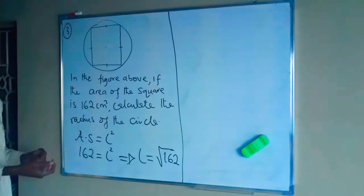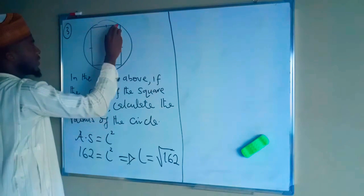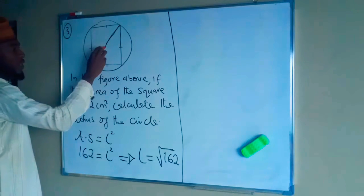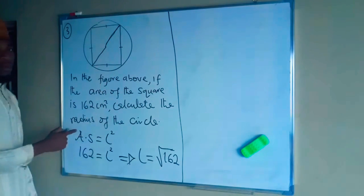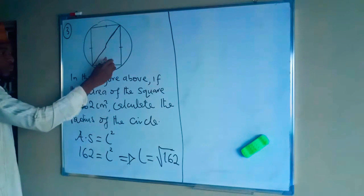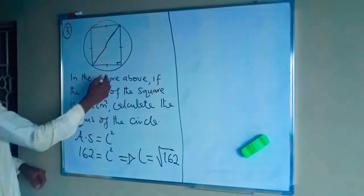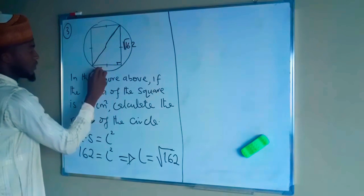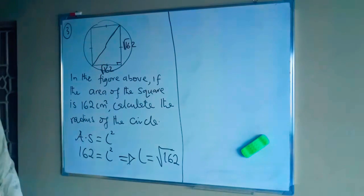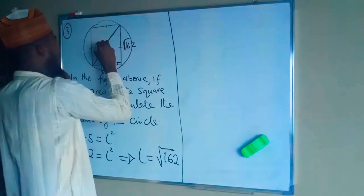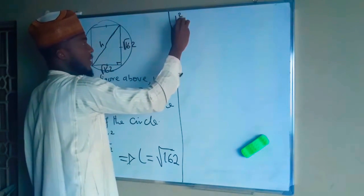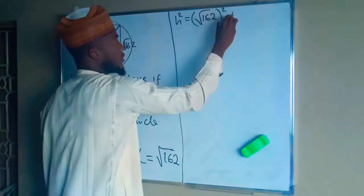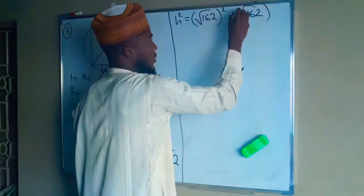The radius runs from any point on the circumference to the centre. Looking at the diagram, the radius is the hypotenuse of a right-angle triangle whose two legs are each √162. Since both sides are √162, we apply Pythagoras: H² = (√162)² + (√162)².